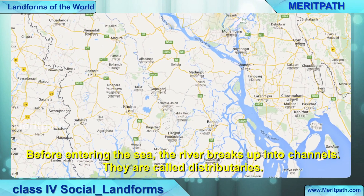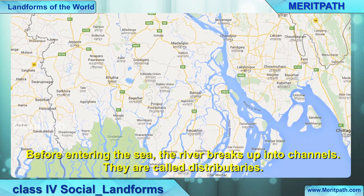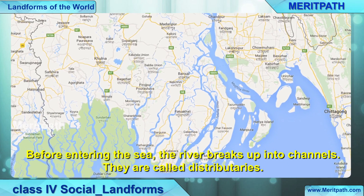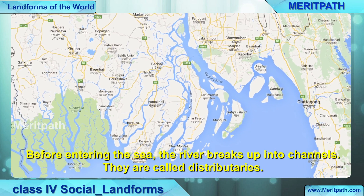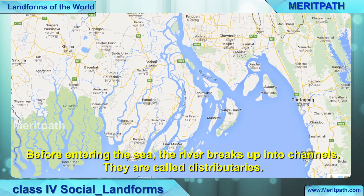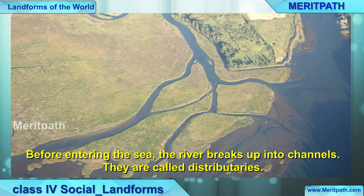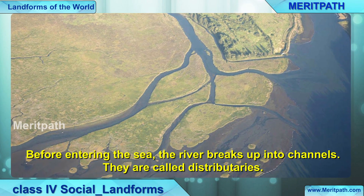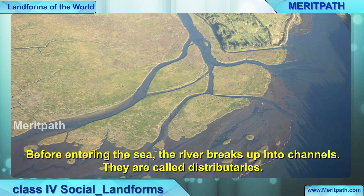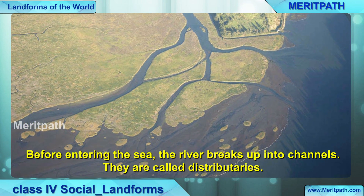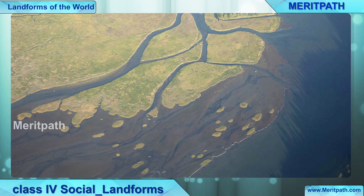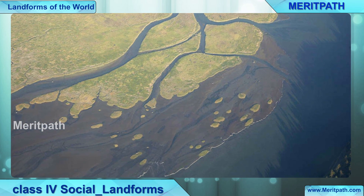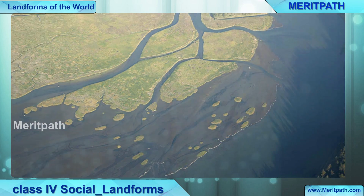Now, what are distributaries? Before entering the sea, the river breaks up into channels — this is the opposite of tributaries. In tributaries, different small rivers join the main river. In distributaries, the big long river breaks up into different small rivers before entering the sea. These are called distributaries.